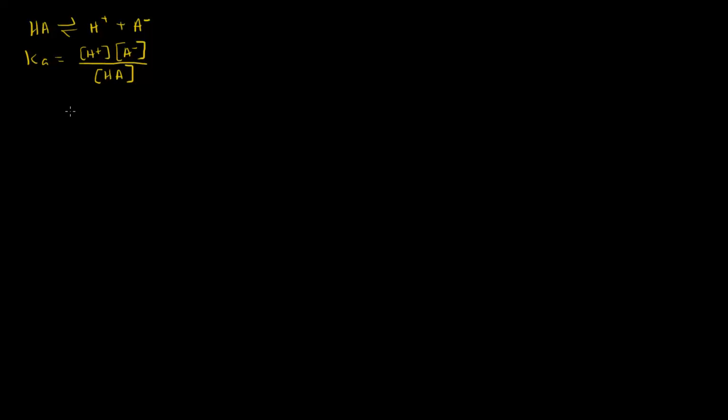Now, what you could do is simply move this H-plus, divide both sides by this H-plus so that we can get this: Ka over H-plus equals the conjugate base concentration over the undissociated acid concentration. So notice this is the base-to-acid ratio. Here, we have the Ka and the H-plus concentration.